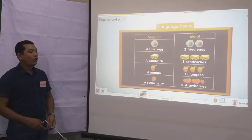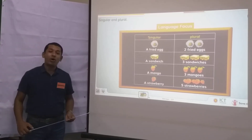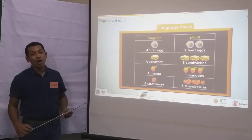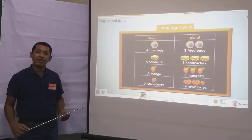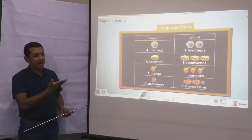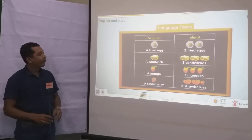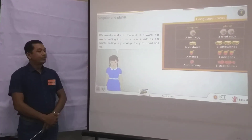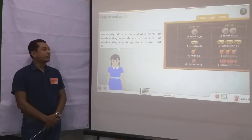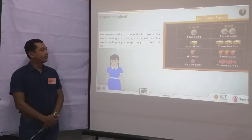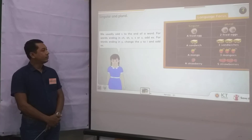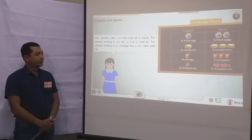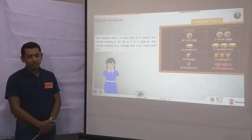Okay, my dear students, now I am playing a video of this lesson and all of you just listen carefully. We usually add S to the end of a word. For words ending in CH, SH, X, S, or Z, add ES. For words ending in Y, change the Y to I and add ES.